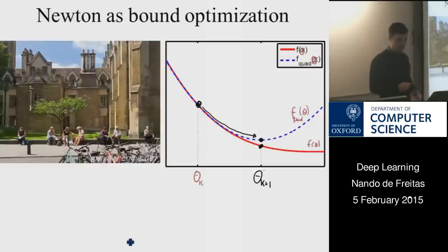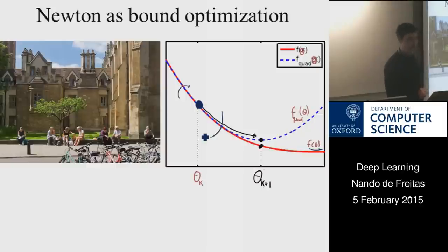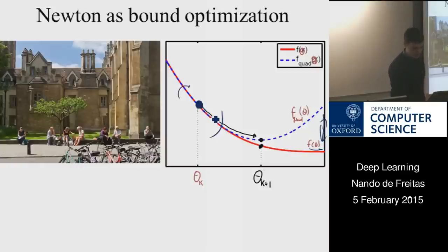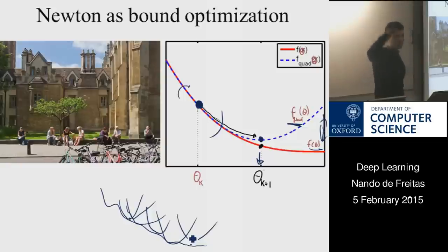The picture: you have your function f of theta in red. You're currently at a point, descending. What you do is fit a quadratic that provides a good approximation near theta k — near the point it's a good approximation, far away the error is large but we don't care about far away. You find the minimum of that quadratic and that is your new theta k. Newton's method is essentially fitting quadratics and minimizing quadratics as you go down — it's upper bound minimization.